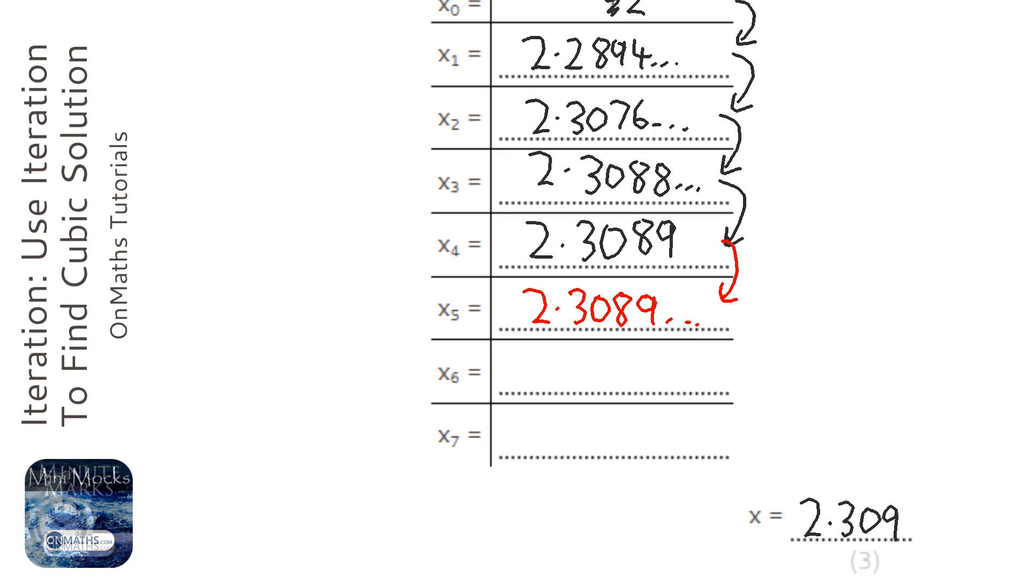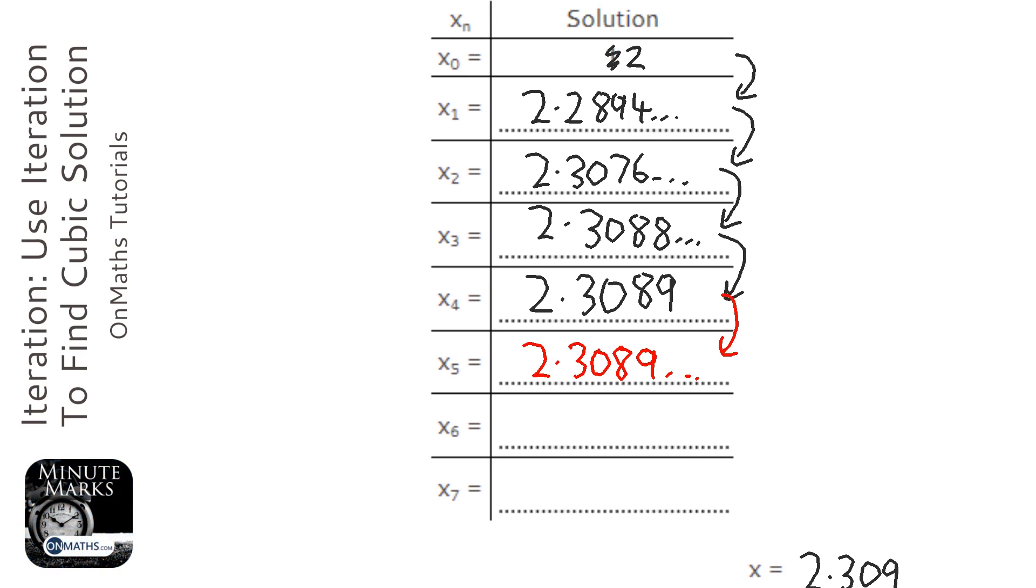But all of the working out here is what you give for the marks. So x₀ equals, x₁ equals, x₂ equals, x₃ equals. You need to show the examiner what you're doing.